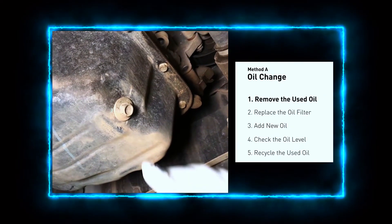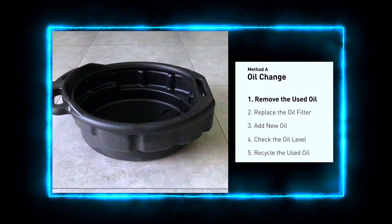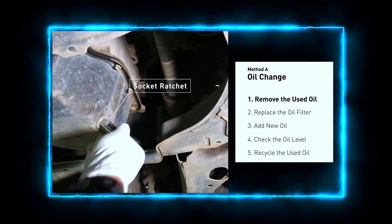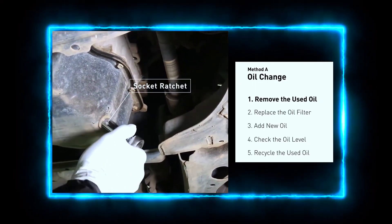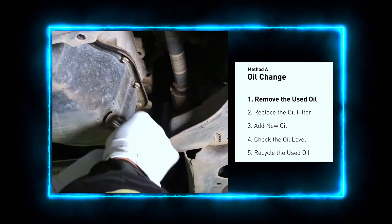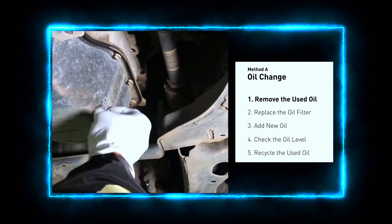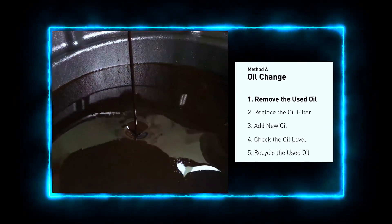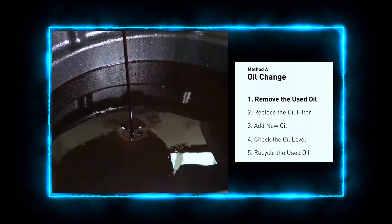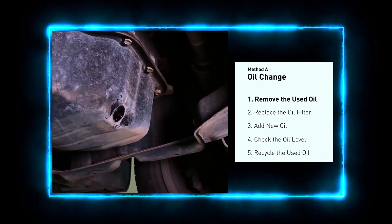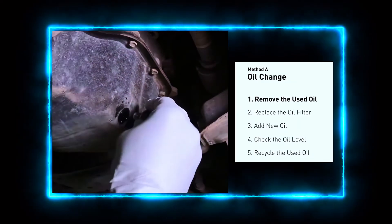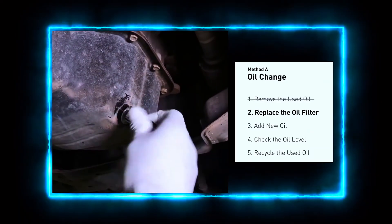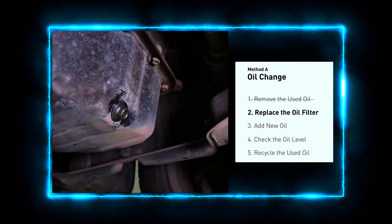Locate the oil drain plug — it's usually on the bottom of the engine. Use your socket set to loosen the plug, and place the oil drain pan underneath to catch the old oil. Carefully remove the drain plug and let the old oil drain completely. While the oil is draining, it's a good time to inspect the plug and washer for any signs of wear or damage.